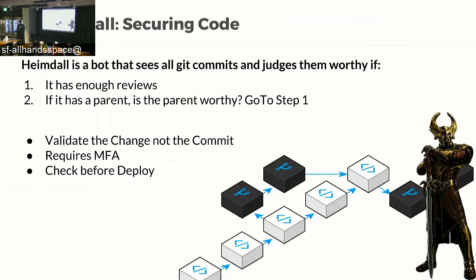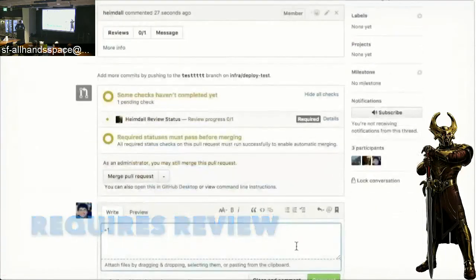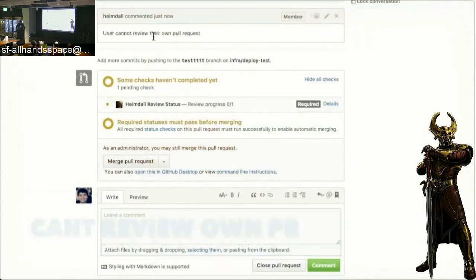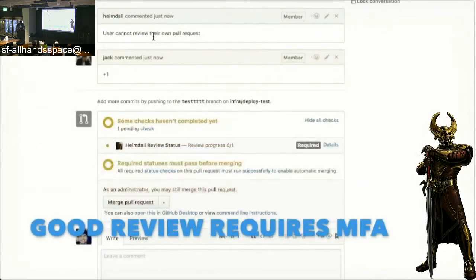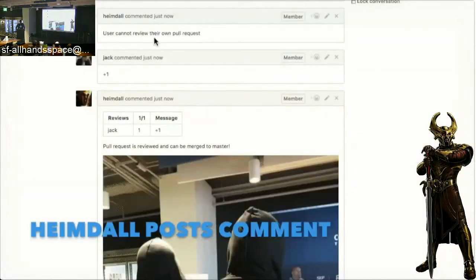We require MFA on every single review. This is because of a particular exercise where OAuth credentials were out there and someone was able to impersonate — if you can remember every single service where you've logged in with GitHub, that application could impersonate you inside GitHub and submit a review on your behalf. So every time we do a plus one or review a particular code change, we have to pull out our phones. CodeFlow checks before every deploy whether that deploy is reviewed — if someone gets unreviewed code onto the master branch, CodeFlow will be the last line of defense to make sure it doesn't get into production.